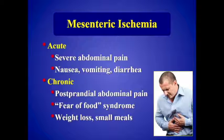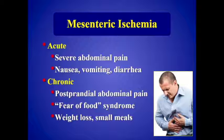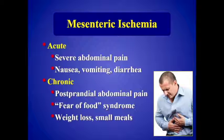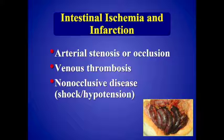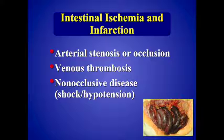For the evaluation of mesenteric ischemia, we typically consider if the patient is presenting with acute symptoms or chronic pain. Patients with acute symptoms come into the emergency room with severe abdominal pain, nausea, vomiting, diarrhea, and are usually whisked off for a CT angiogram. The patients we typically see in ultrasound have chronic abdominal pain — fairly nonspecific. They may have pain after eating, a history of fear of food, weight loss, and take in small meals. The causes include arterial stenosis or occlusion, venous thrombosis, or less commonly a non-occlusive process such as low flow related to shock or hypertension.